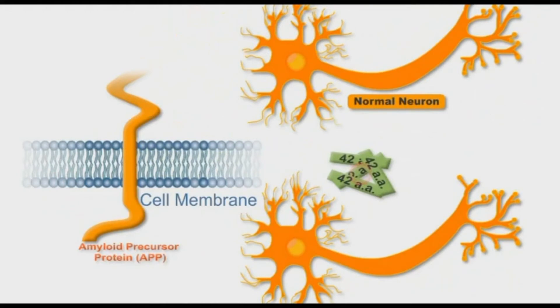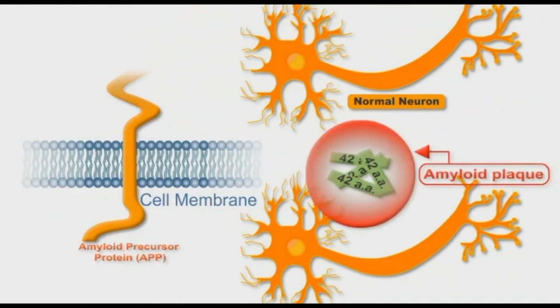These fragments accumulate to form hard, sticky, and insoluble clumps called amyloid plaques. These plaques trigger disruption and destruction of the brain tissue of Alzheimer disease patients.